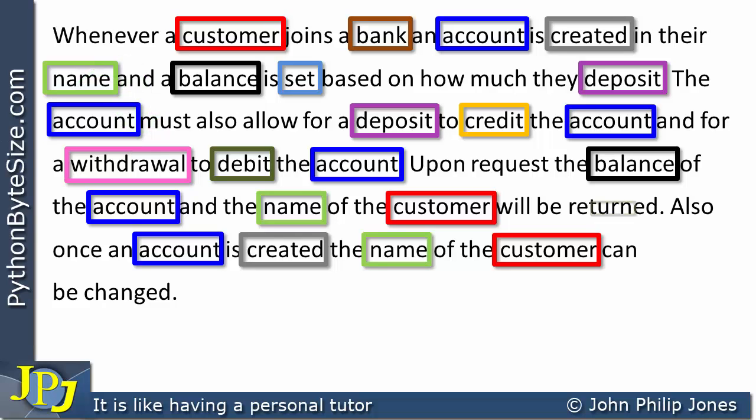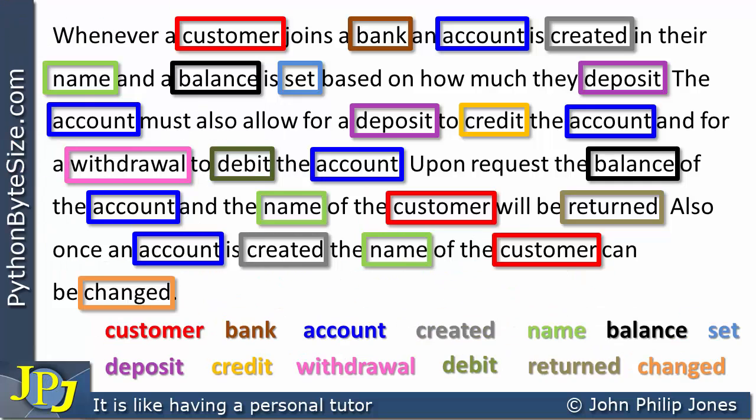The next word highlighted is 'returned'. In the context of this specification, this is suggesting I'll need some mechanism to return both the balance of the account and the name of the customer. Carrying on, I now come to the word 'changed', which means there must be some mechanism to change the name of the customer — for example, if somebody gets married and wants to change from their maiden name to their married name.